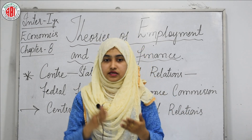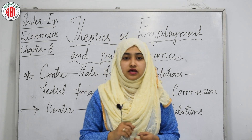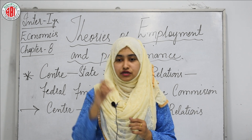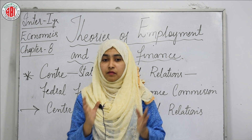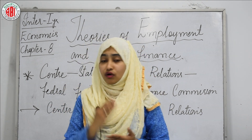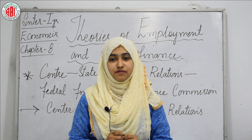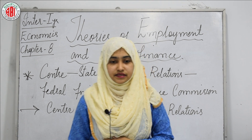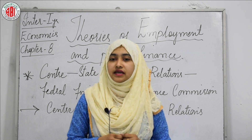Now we will see central-state financial relations, federal finance, and the Finance Commission. The financial relationship between the center and the state is provided in the constitution, which gives a detailed scheme for the distribution of financial resources between the union and the states. The constitution makes a broad distinction between the power to levy taxes and the power to appropriate the proceeds of a tax. The union parliament has exclusive powers to levy taxes on items in the union list, while the state legislature levies taxes on items in the state list.